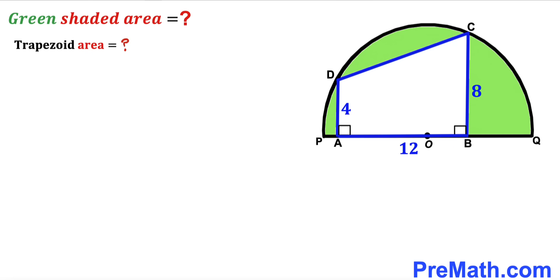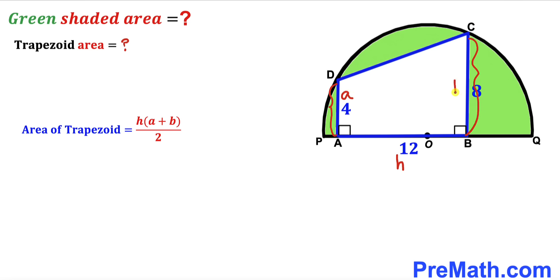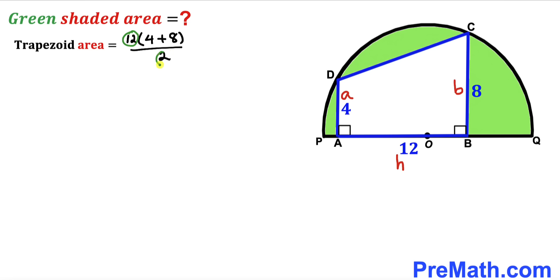We will calculate the area of trapezoid ABCD first. The area of a trapezoid is height h times the sum of bases a and b, all over 2. Here, AB is our height h = 12, AD is base a = 4, and BC is base b = 8. So the area is 12 × (4 + 8) / 2 = 12/2 × 12 = 6 × 12 = 72 square units.